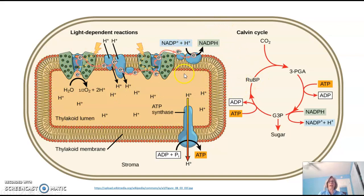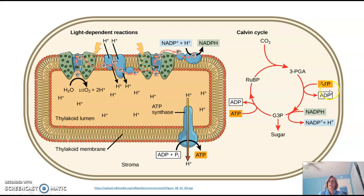Looking at the chloroplast as a whole, we have the thylakoid membrane with the light reactions, and you can see that the electrons placed on NADPH are actually in the stroma. Even though the light reactions occur in the thylakoid membrane, NADP+ picks up the electron on the stroma side of the light-dependent reactions. The ATP synthase also makes ATP on the stroma side of the thylakoid membrane. This is very convenient because the second phase of photosynthesis — the Calvin cycle or light-independent reactions — occurs in the stroma, so the electrons and ATP needed are already in the correct location. This cycle will be covered in the next video on this channel.